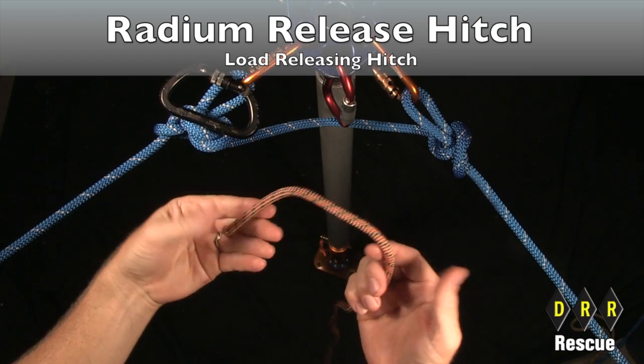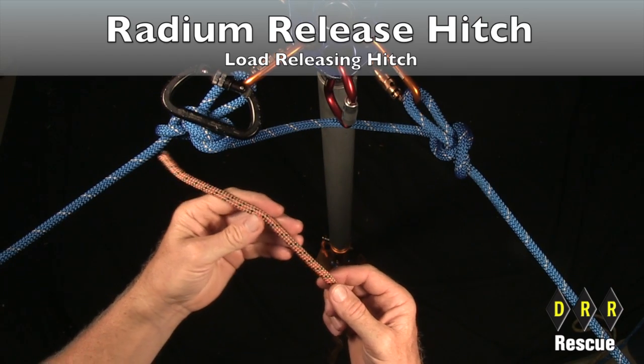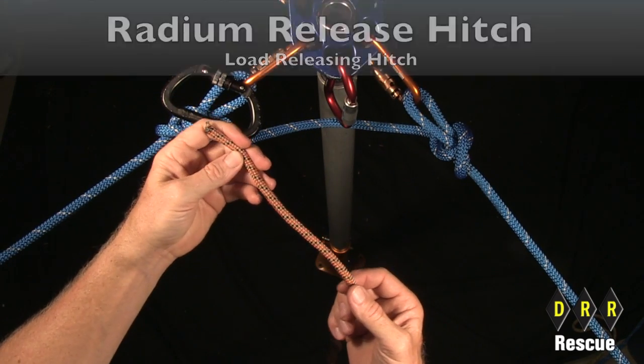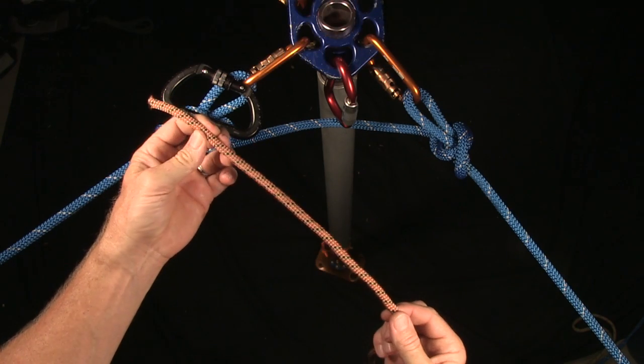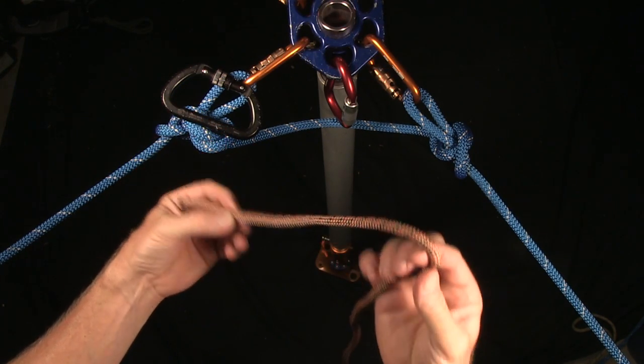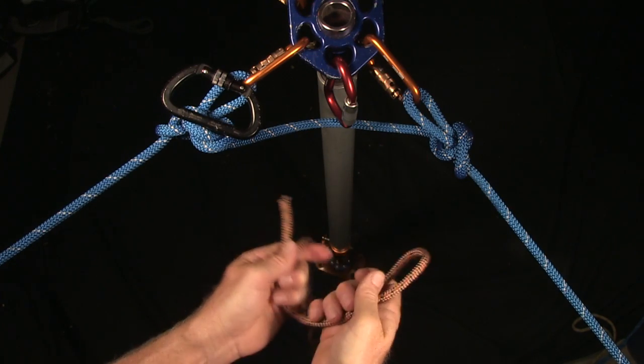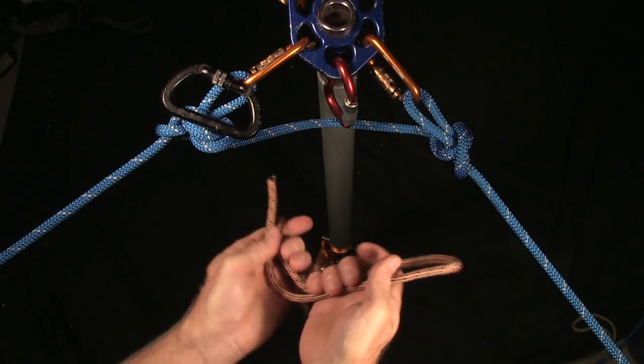Okay, the Radium Release Hitch is very easy to tie, much easier to tie than the BC load releasing hitch. You need 33 feet of 8 millimeter cord and you begin by tying a figure 8.